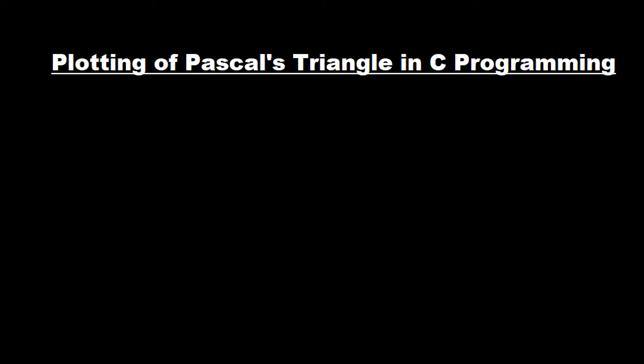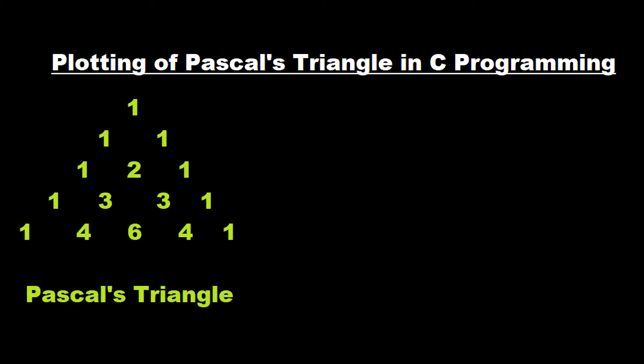So what is a Pascal's triangle? A Pascal's triangle can be as shown in the figure. Here you can see, depending on the number of rows, we can have a different result. The first row starts with 1, then followed by 1 and 1, and then the next row will have 1 and 1, and these two ones will be added and in between we will have a 2.